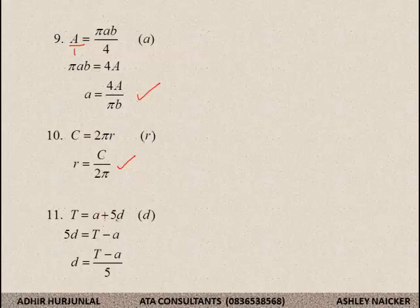T is equal to A plus 5D. Simplify for D. In order to simplify, guys, step number 1. I will say A plus 5D is equal to T. Remove the A. And that's where I have the T minus A. And then divide by 5.